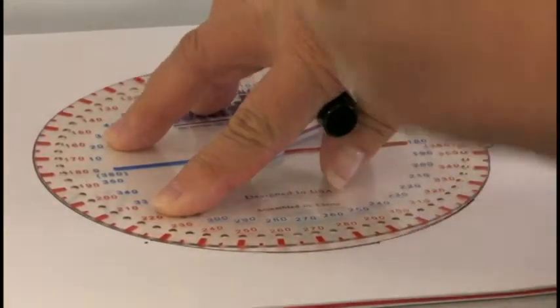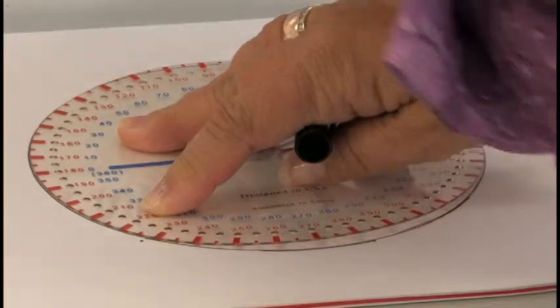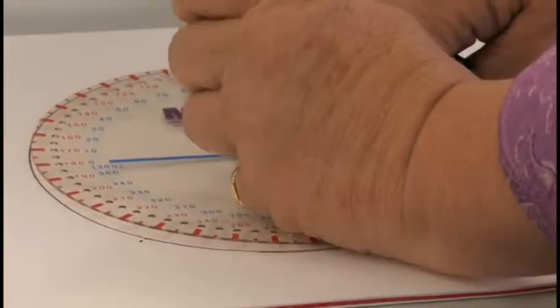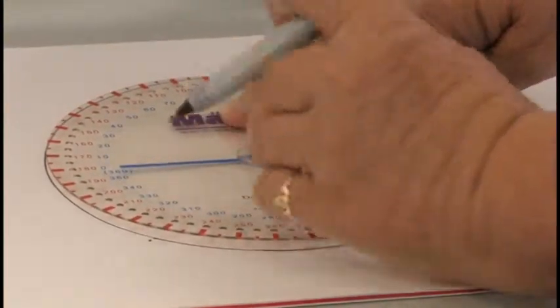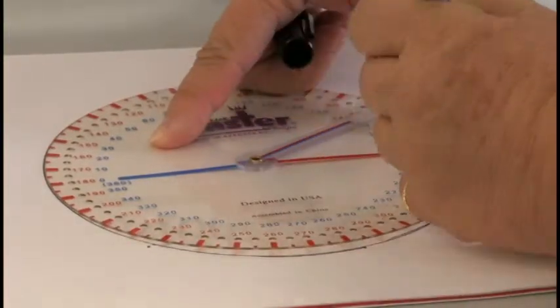Again, remember we're working with young children so we want them to see what a circumference looks like and actually what a circle looks like. We're going to trace the circumference and then we're going to put a dot at the center point of our circle, and then we're going to put a dot at the 0 degrees.